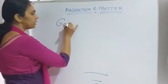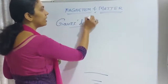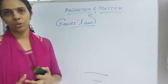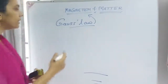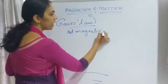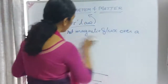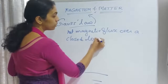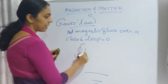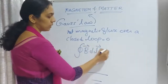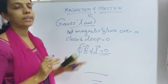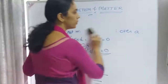Next we are going to consider Gauss's Law in magnetism. We already learned Gauss's law in electrostatics. In electrostatics, the closed integral of E·dA equals q/ε₀. But in magnetism, the net magnetic flux over a closed surface is equal to zero — that is, the closed integral of B·dA = 0. This is called Gauss's Law in magnetism.